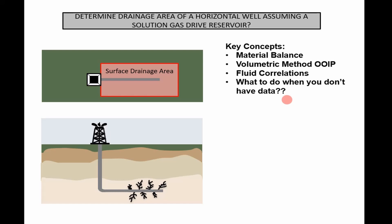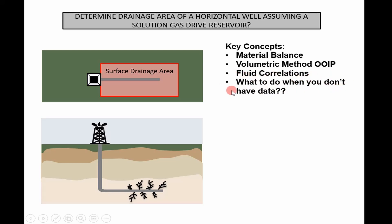I'm going to walk through a step-by-step procedure to determine the drainage area of a horizontal well, assuming a solution gas drive reservoir. We're going to use a well from the Wolf Camp play in New Mexico — basically a limestone formation with horizontal wells drilled through it to extract oil and gas. Key concepts to focus on: material balance applied to an under-saturated solution gas oil reservoir, the volumetric method to calculate original oil in place, fluid correlations, and rules of thumb for temperature and pressure when we don't have data.